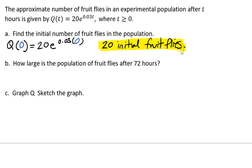It asks, how large is the population of fruit flies after 72 hours? Now our t value is going to equal 72. So we're looking for Q of 72. I want you to go ahead and plug this into your calculator on your own, and push pause on the video. When you're done, push play and we'll see if you plugged it in correctly.